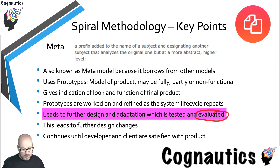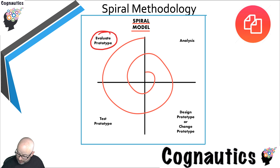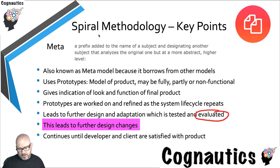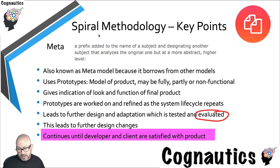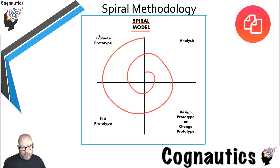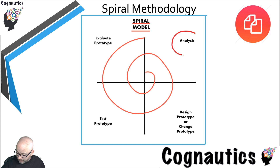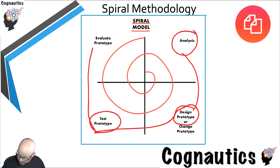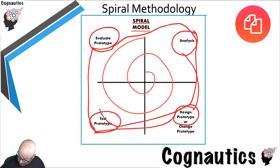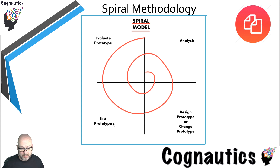Evaluation happens at every single iteration. The evaluations lead to further design changes, and this cycle continues until both client and developer are satisfied that the product does what it's supposed to do. So we start off by analyzing what we want to do, that moves us into designing a prototype, then we test it, evaluate what we've done, and just keep going round and round until we end up with the product the customer actually wants.